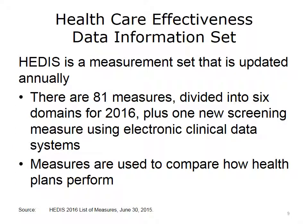HEDIS is a set of standardized quality measurements designed to show how well health plans perform on common standards. The steward of HEDIS is the National Committee on Quality Assurance, or NCQA, a private nonprofit founded in 1990. In addition to HEDIS, NCQA engages in other quality and accreditation programs, such as certifying patient-centered medical homes. Currently, HEDIS measures are used by over 90% of U.S. health care plans. For 2016, HEDIS contains 81 quality measures falling into six domains: effectiveness of care, access and/or availability of care, experience of care, utilization and risk-adjusted utilization, relative resource use, and health plan descriptive information. There is also a first-year measure to track utilization of the PHQ-9, a screening tool to monitor depression symptoms reported by patients, collected using electronic clinical data systems.